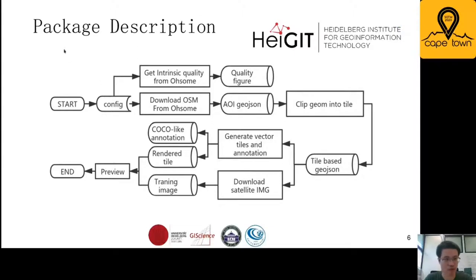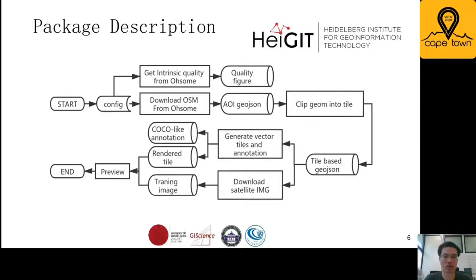Let me show you the package. This is the workflow figure for Awesome2Label. Starting with a YML config, we can get intrinsic quality from Awesome. Also, we can download OSM data from Awesome and the result format is in GeoJSON, so we can easily modify it if you want to add or delete some features. After that, using Awesome2Label, we clip the whole GeoJSON into tiles and get a lot of tile-based GeoJSON.